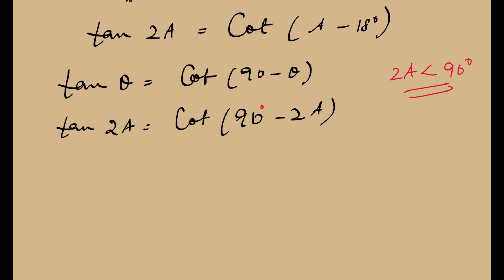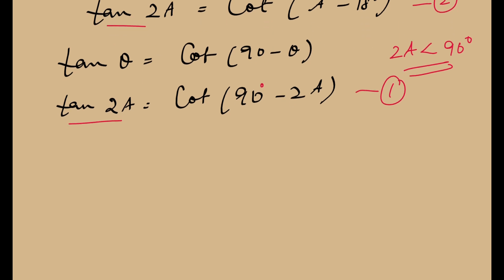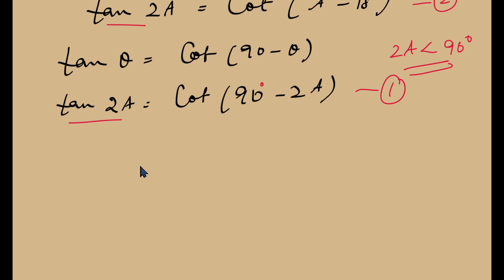So if I name this as equation 1 and this as equation 2, now since here tan 2A is cot of 90 minus 2A, and in equation 2 tan 2A is cot of A minus 18 degrees, I can equate the cotangent ratios of both sides of both equations. Cot of A minus 18 is equal to cot of 90 minus 2A.